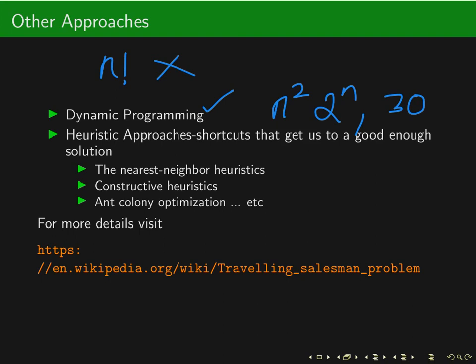Heuristic approaches will give answers quickly. Some heuristic approaches are the nearest neighbor approach, constructive heuristics, and ant colony optimization. However, these heuristic approaches will not give you the optimum solution — rather, they give a solution very close to the optimum. To learn more about these heuristic approaches you can refer to the Wikipedia link shown. In the next presentation we will learn about the dynamic programming approach, which reduces complexity to O(n² · 2ⁿ). Thank you.